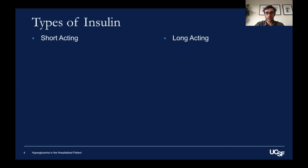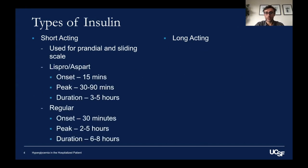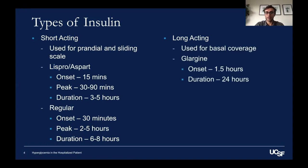We generally use two types of insulin: short-acting and long-acting. Short-acting insulins are used for prandial and sliding scale dosing. This includes insulins like Lispro and Aspart as well as regular insulin. Long-acting insulins are used for basal coverage and these include insulins like Glargine as well as Detemir.